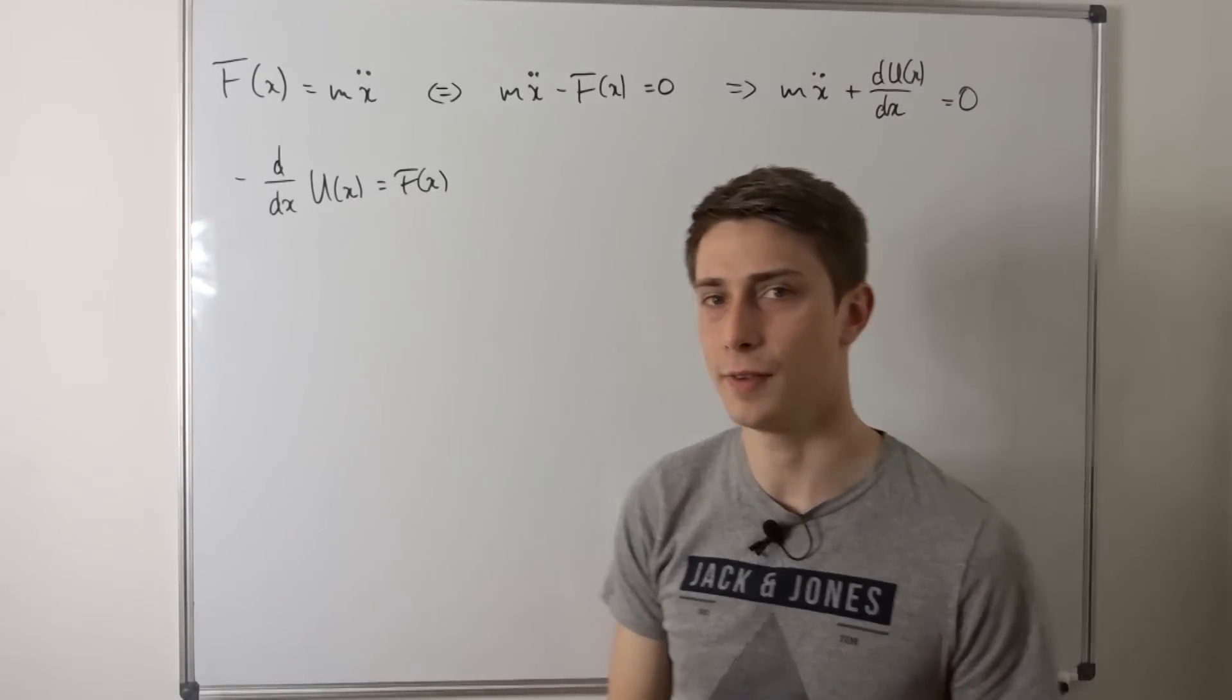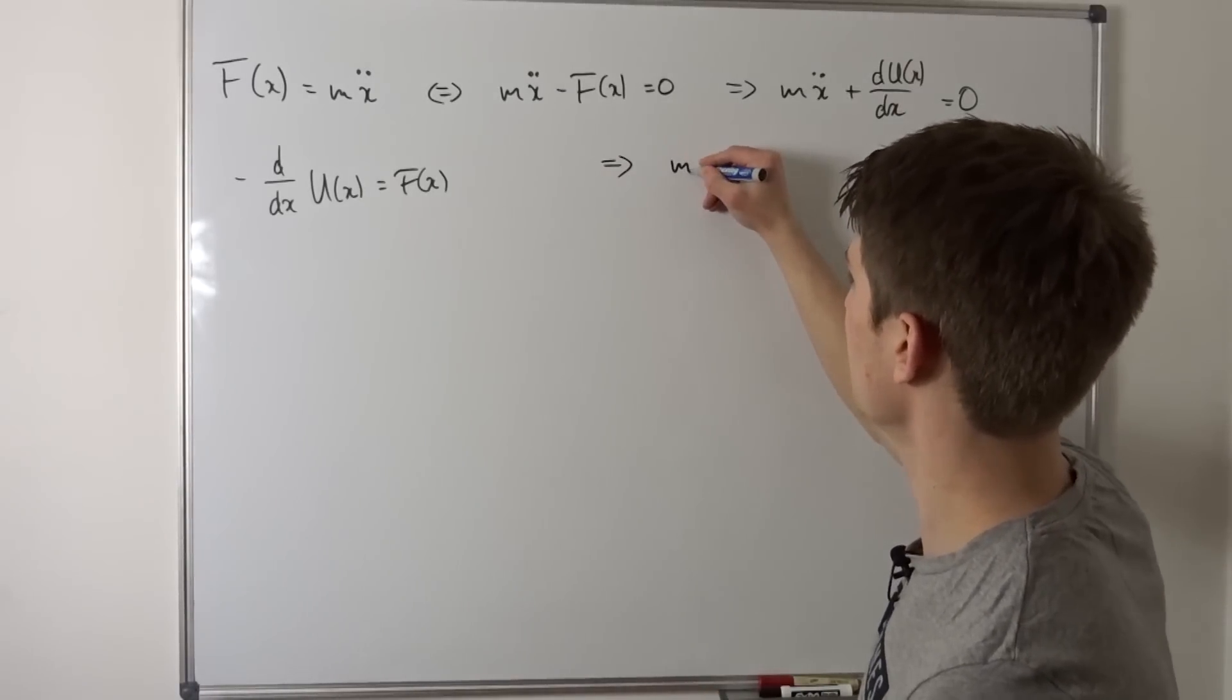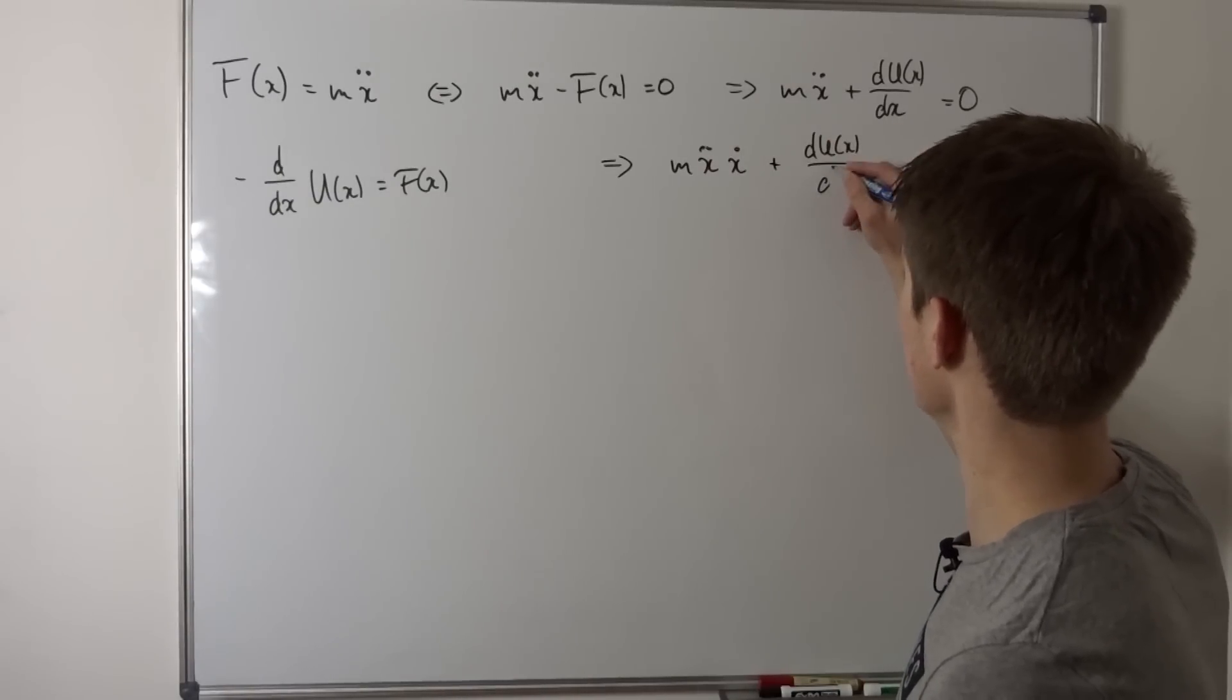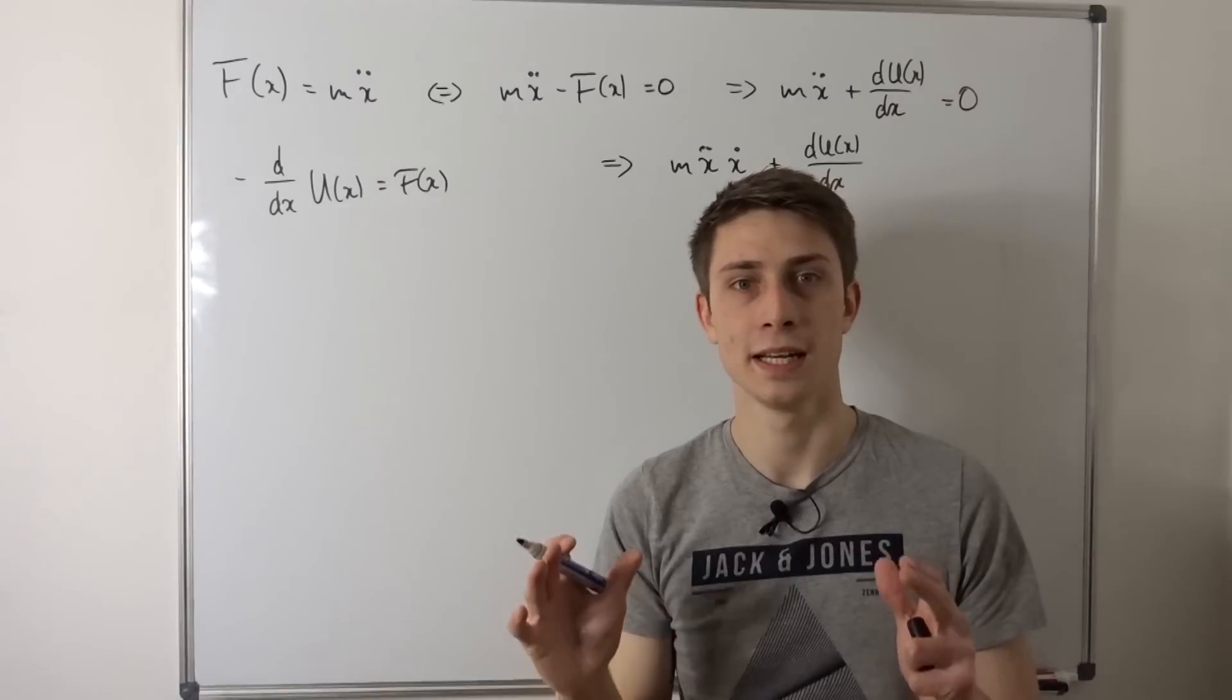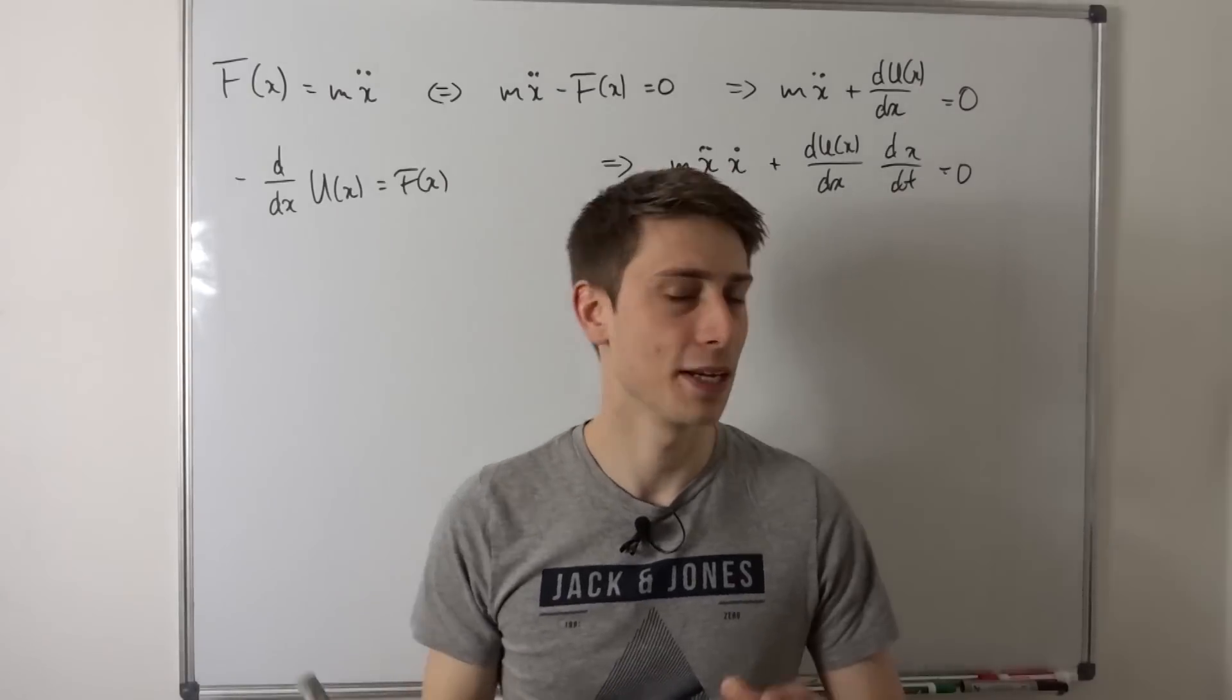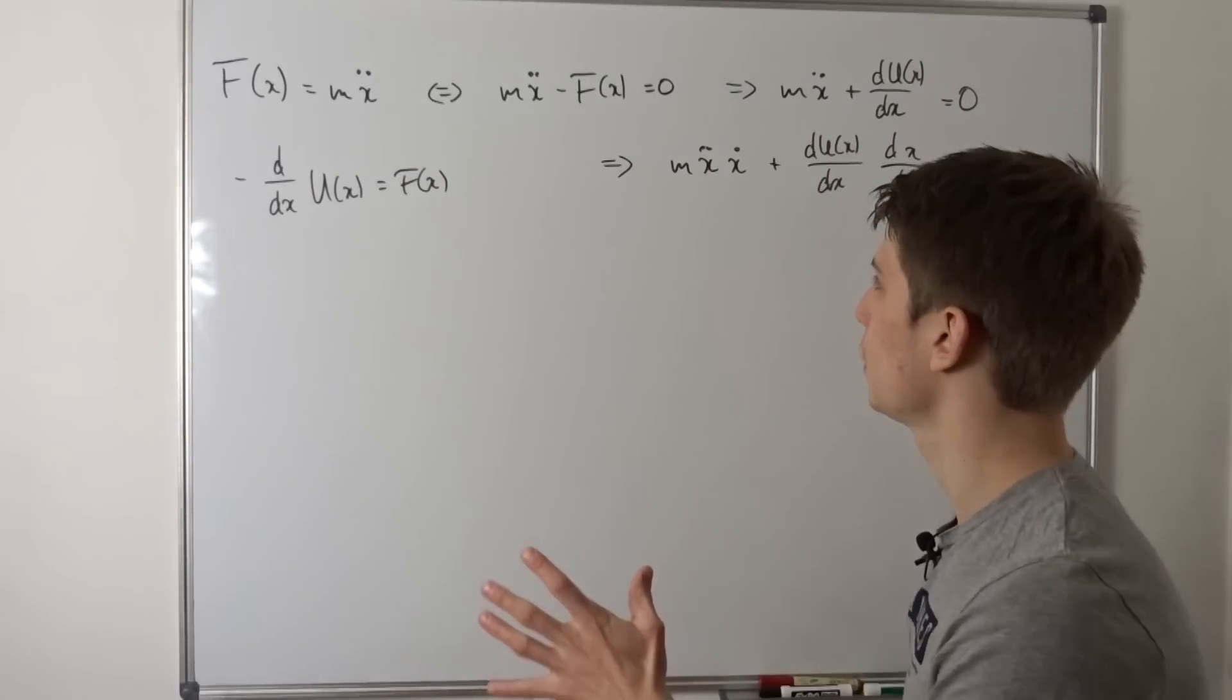And just like in the last video, we are going to multiply both sides by the velocity under the condition that it isn't equal to zero for now. So we now get m x double dot times x dot positive du dx and remember what the velocity is. It's just dx over dt. So I'm going to write it that way dx over dt and it's going to be zero. And it's the same procedure once again. We want to factor out a differential d dt to get some kind of energy.